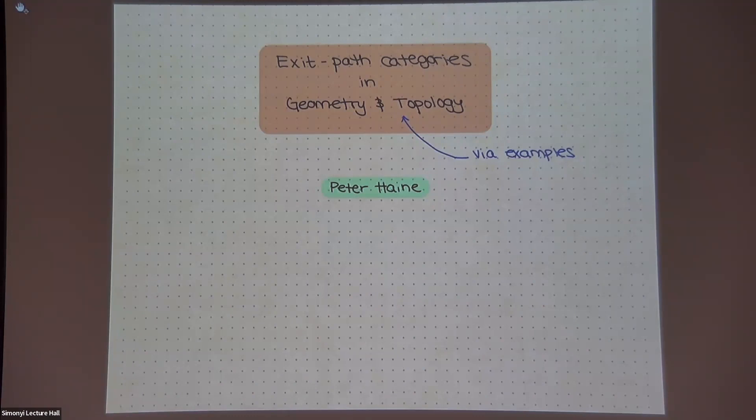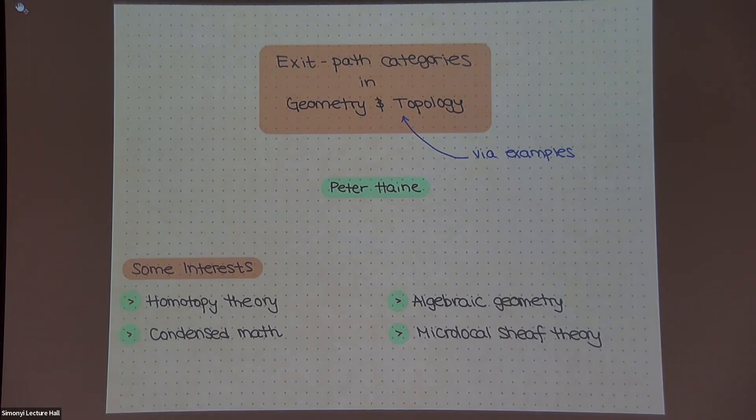Maybe let me start by just saying some things I'm interested in. So I kind of maybe come from homotopy theory and algebraic geometry, also interested in condensed math and related things. And David Nadler has recently got me very interested in microlocal sheaf theory. So I'm always happy to talk if anyone wants to talk about any of this stuff.